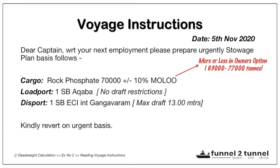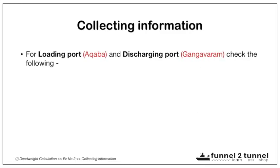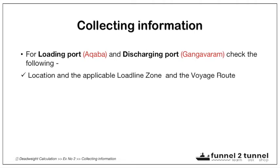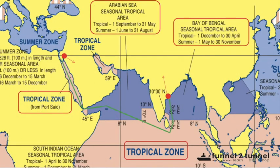Moving to step one — collecting information. We'll go through the example quickly as the detail was covered in the previous video. For loading port Akaba and discharging port Gangavaram, check: the location and applicable load line zone, the voyage route, the water density, and any other limitations at the port obtained through the local agent, charterers, or any other information source. Let us check the load line chart.